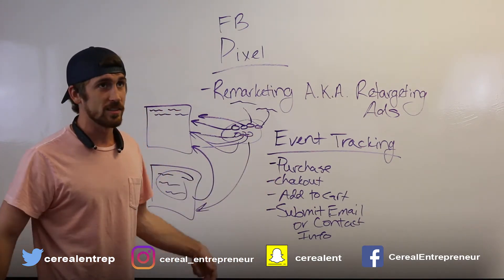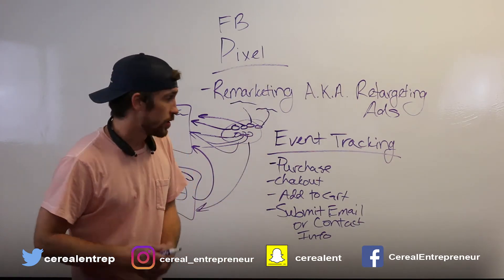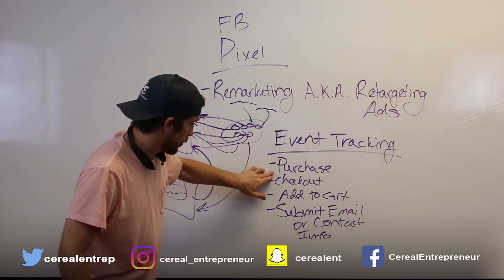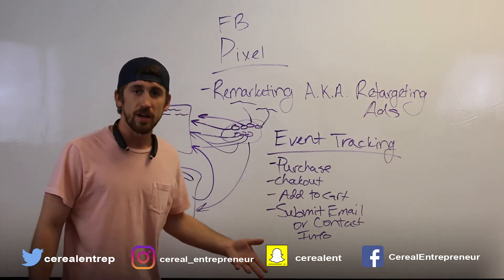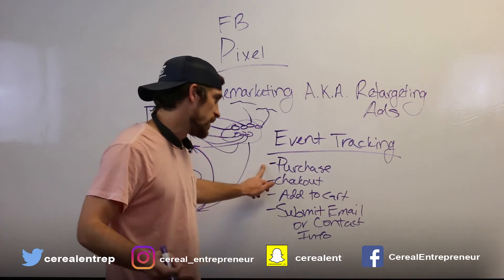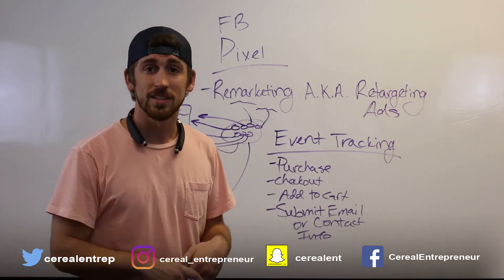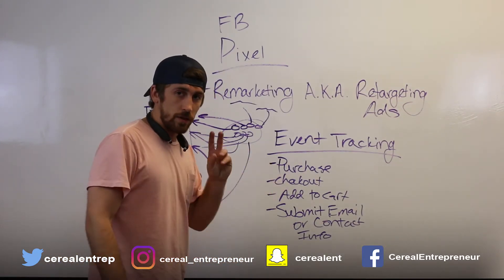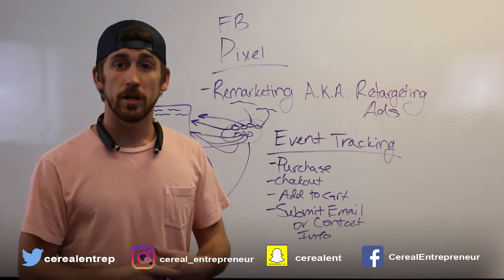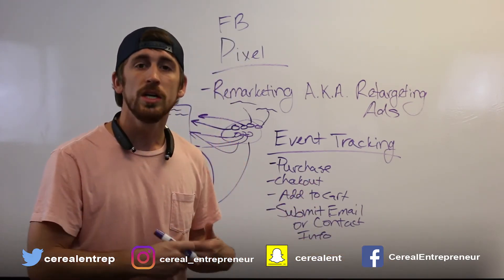There are even more event types - like add to wish list - you can check them all in Business Manager. The key point is you need to be using these in your remarketing campaigns. Someone who added to cart, reached checkout, or submitted contact info is a qualified lead - they've already gone deep into your buying process. You can remarket to them with ads saying 'here are four reasons you should purchase' or offer a 10% discount to bring them back.